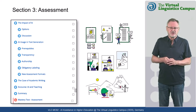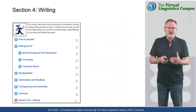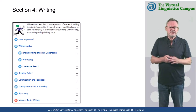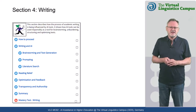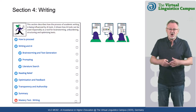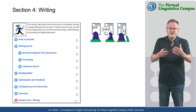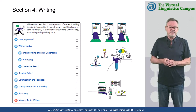The final section is about how academic writing is being influenced. It shows how artificial intelligence tools can be used responsibly as tools for brainstorming, unburdening, structuring, and optimizing texts.